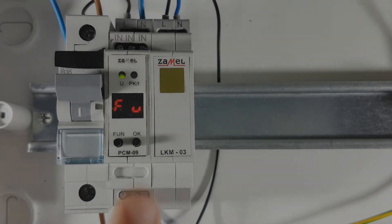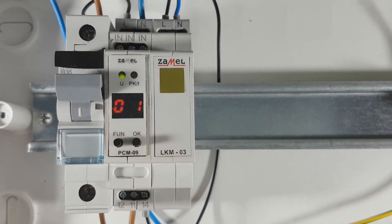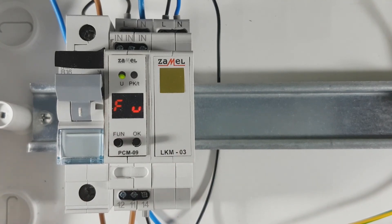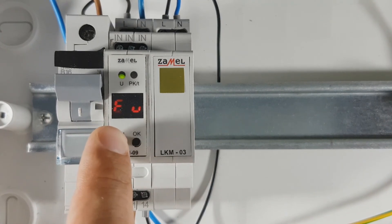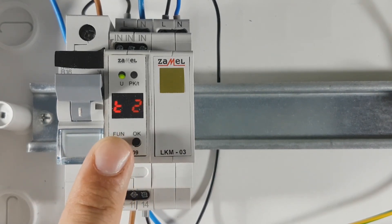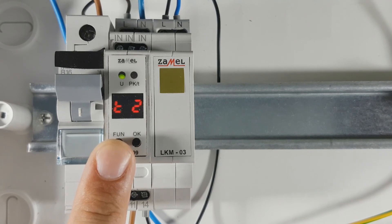In order to set the operating mode, press and hold the function button for 3 seconds. When function selection is displayed, press the OK button. The current operating mode is displayed. By pressing the function button, the current operating mode is changed. The OK button confirms the changes.